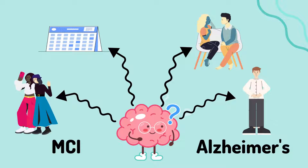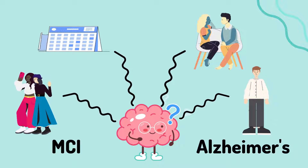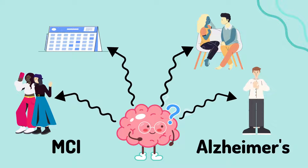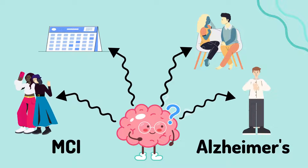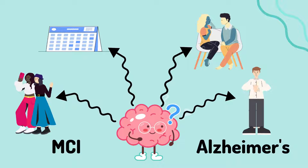The distinction between MCI and dementia or Alzheimer's disease is made based on the level of impact these cognitive changes have on one's daily life. Individuals with MCI might find that they forget the name of their best friend or have trouble planning activities. In contrast, dementia and Alzheimer's disease patients can have trouble carrying conversations, doing daily activities such as getting dressed, and might get lost or wander.